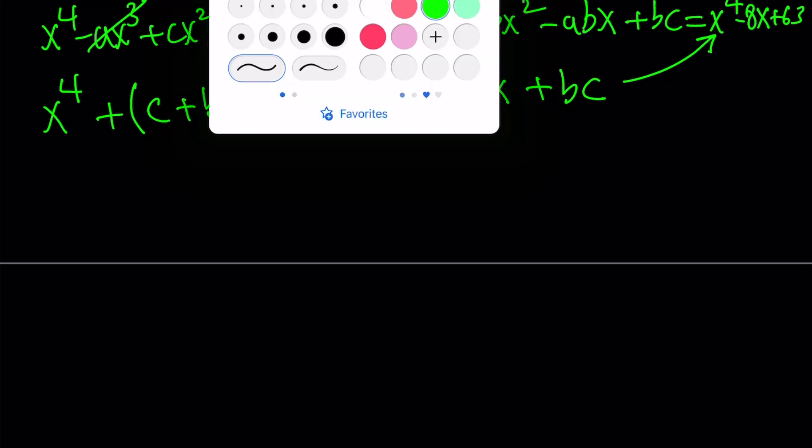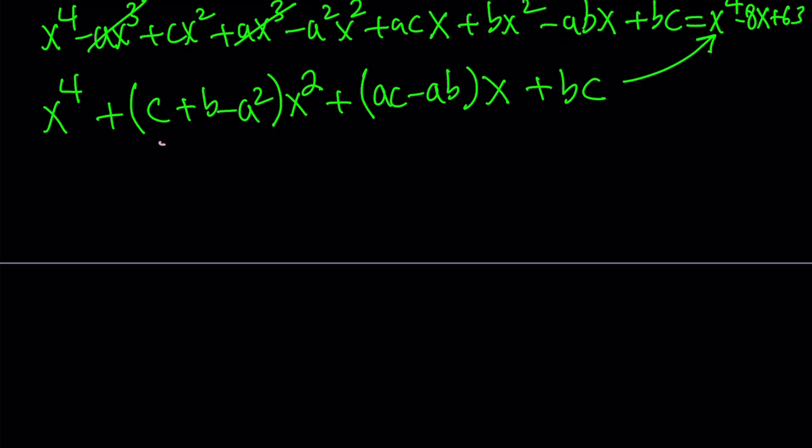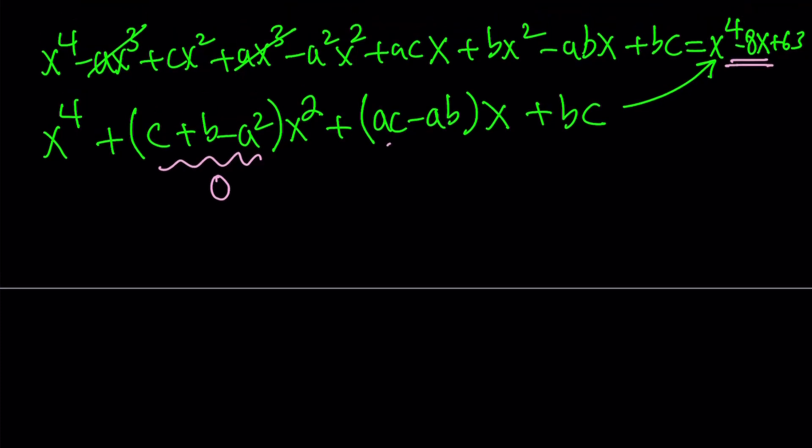Let's go ahead and rearrange. x to the fourth plus, I'm going to put together the coefficients of x cubed and x squared, but x cubed cancels out. We already talked about it, right? These two cancel out. Leaving us with the following: c plus b minus a squared all multiplied by x squared. And then the coefficient of x is ac minus ab. And the constant term is bc. And this should equal the right-hand side. By setting them equal to each other as polynomials, we notice that the coefficient of x squared needs to be 0 because there is no x squared here. And then the coefficient of x needs to be negative 8. And bc is a constant term, and that needs to equal 63.